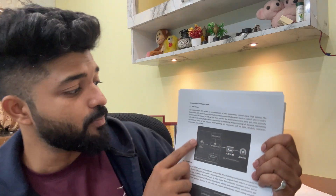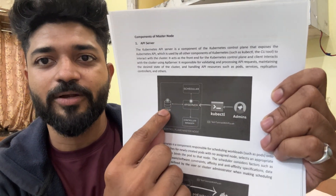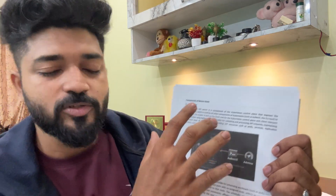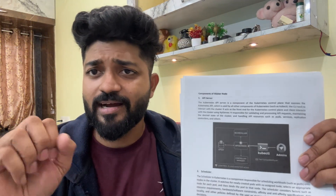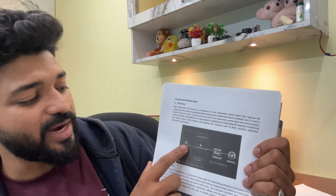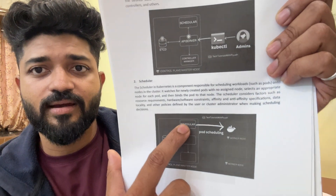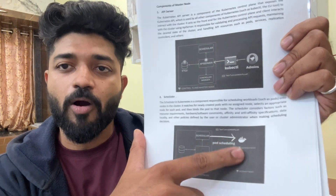When a DevOps engineer runs kubectl get pods, the first component that listens is the API server. Kubernetes can be considered like a three-tier architecture: a UI, something listening as admins put commands, and etcd as a kind of database where data is retrieved. The scheduler does pod scheduling, deciding how pods get placed into various worker nodes.